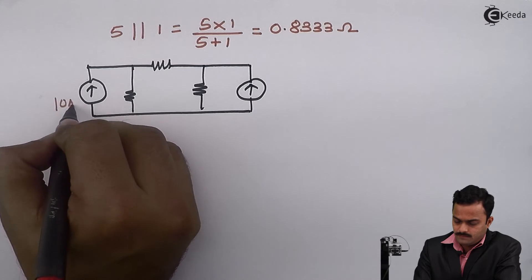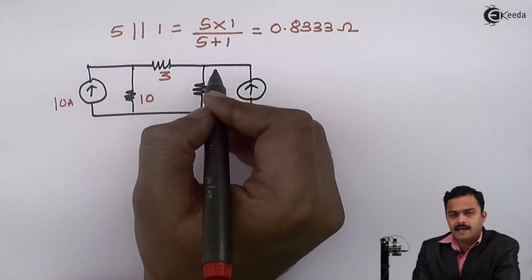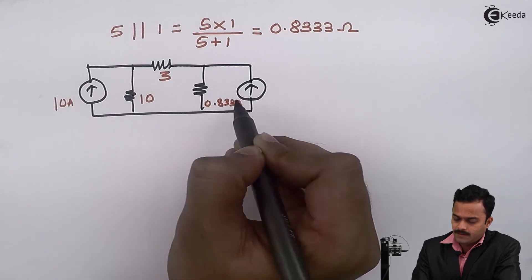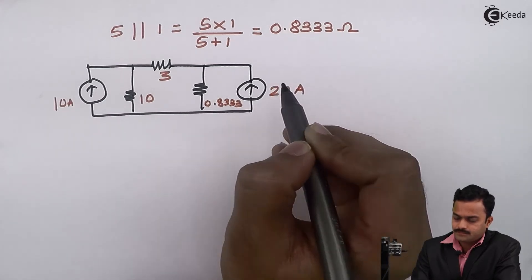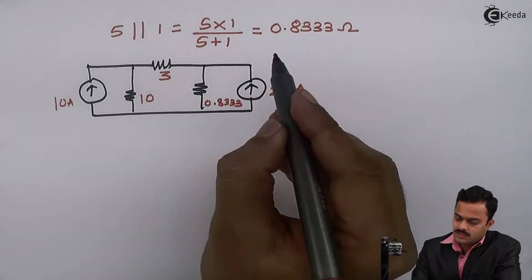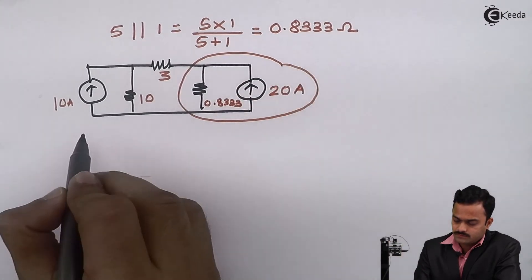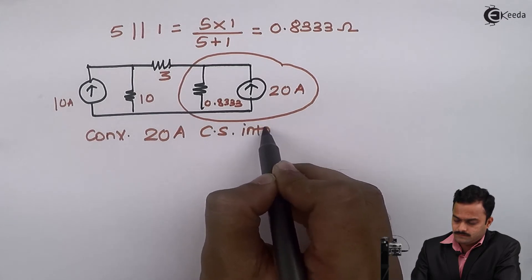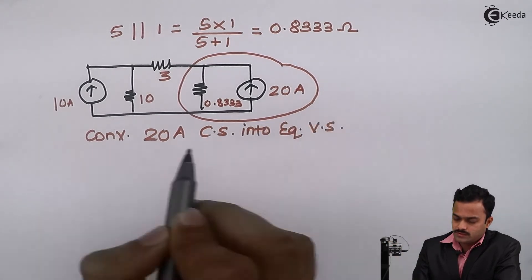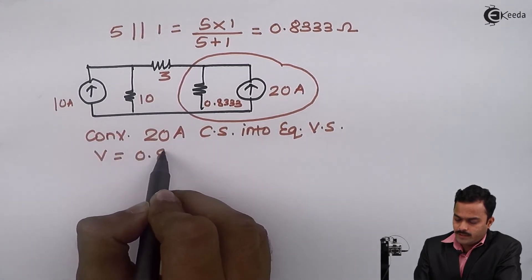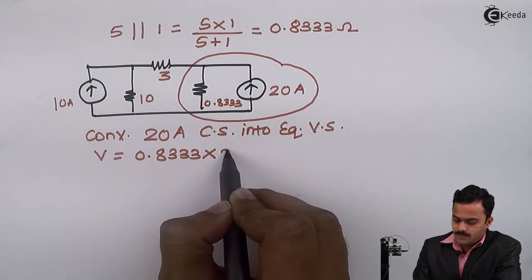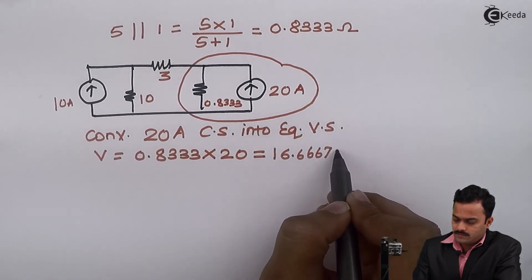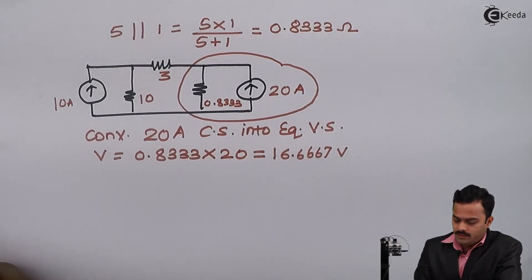In the redrawn circuit: 10 ampere remains as is, 10 ohm remains, 3 ohm remains, 5 ohm in parallel with 1 ohm gives 0.8333 ohm, and the current source is 20 ampere. Now I can convert this 20 ampere current source into an equivalent voltage source. The voltage value will be 0.8333 multiplied by 20, giving 16.6667 volt.